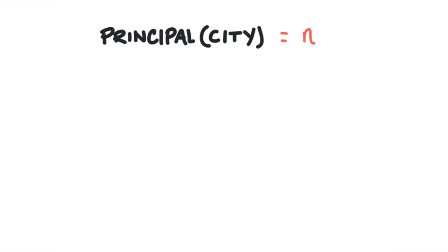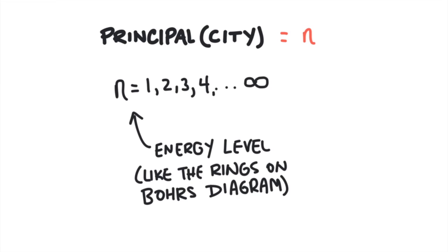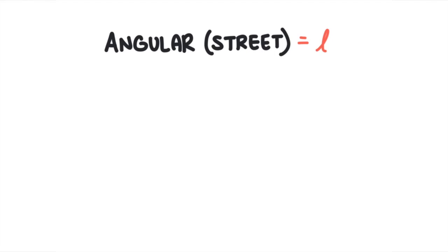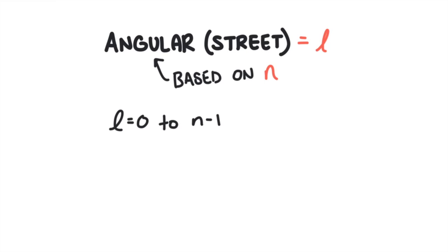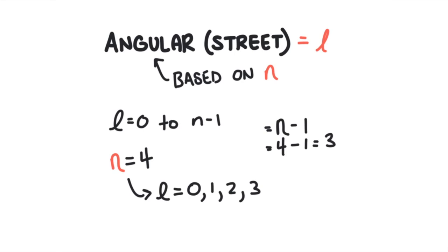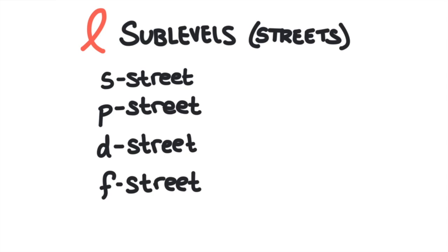The quantum numbers have very specific values. N will have positive integer values starting at 1, 2, 3, and so on. L will have positive integer values based on N, starting at 0 and going up to N minus 1, so L will usually have multiple values. For example, if N equals 4, L will be 0, 1, 2, and 3 — giving four sublevels, or four streets. The angular quantum number values are commonly given letters that relate to the shape of the orbitals: 0 is S, 1 is P, 2 is D, and 3 is F.